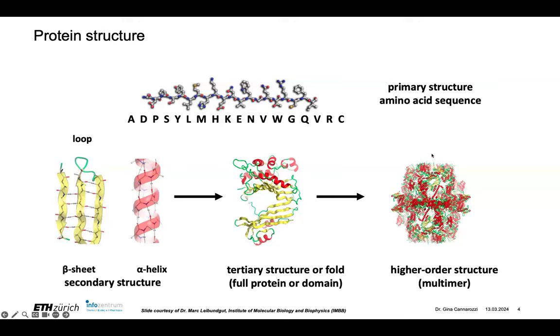Keep in mind that you can also have higher order structures. If maybe eight of these come together and make a big complex, then we'll have something called a multimer, or higher order structures. There's another program called AlphaFold multimer, which is made for predicting complexes and for doing protein-protein interactions.